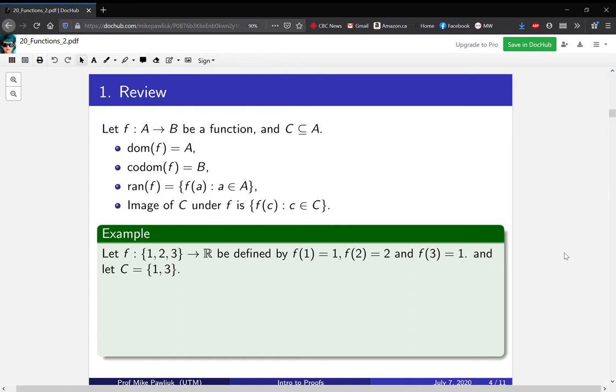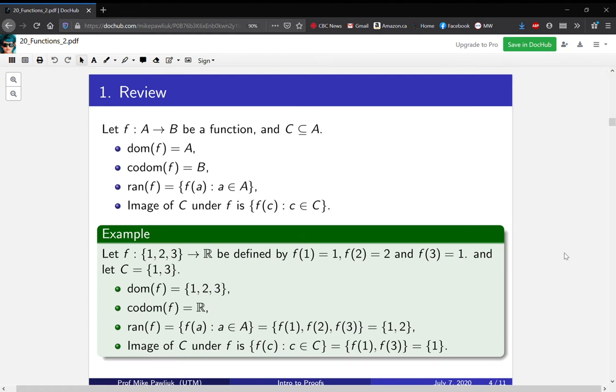Let's look at an example to remind you. Let f : {1, 2, 3} → R be defined by f(1) = 1, f(2) = 2, and f(3) = 1. We'll also let C = {1, 3}. The domain in this case is the set {1, 2, 3}. The codomain is the reals.